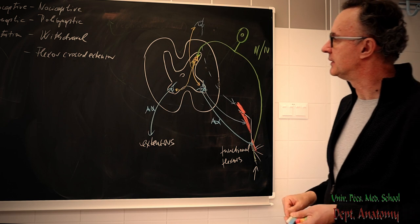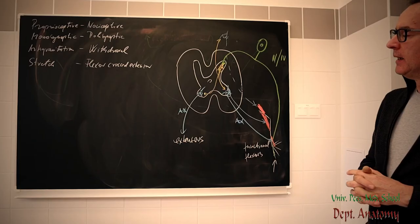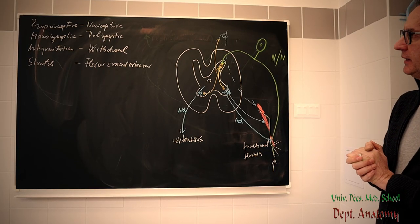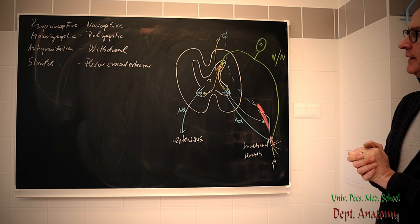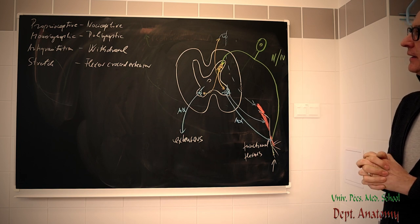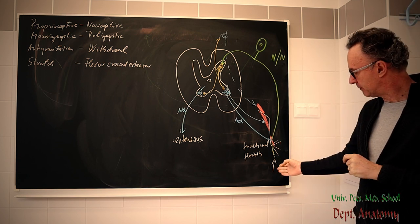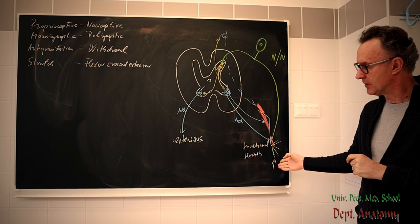So, this is now the topic of the nociceptive reflex. How can we use the nociceptive reflex in the clinical practice in neurology? These are called in the clinical practice as cutaneomuscular reflex. Because the start point is in the skin.